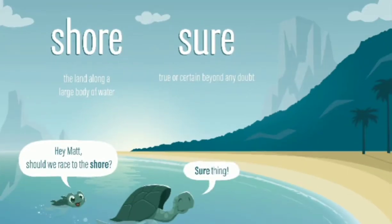Another example is shore and sure. S-H-O-R-E, which means the land along a large body of water, and S-U-R-E, which means certain beyond any doubt. Hey Matt, should we race to the shore? Sure thing.